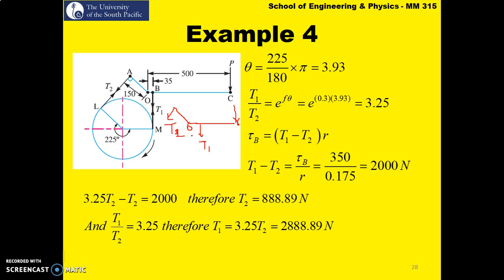So first convert the wrap angle that is given in degrees to radians. So this equals to 3.93 radians. Don't forget to put this down. And then we can get the tension ratio. So T₁ over T₂ is equal to exponential of μθ. So the tension ratio is 3.25.